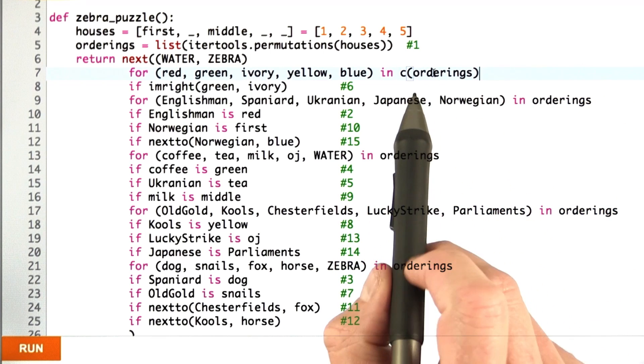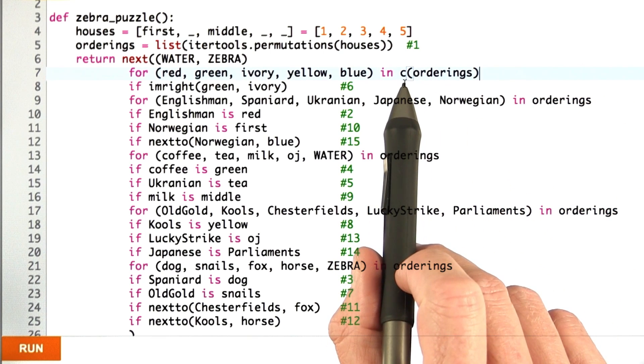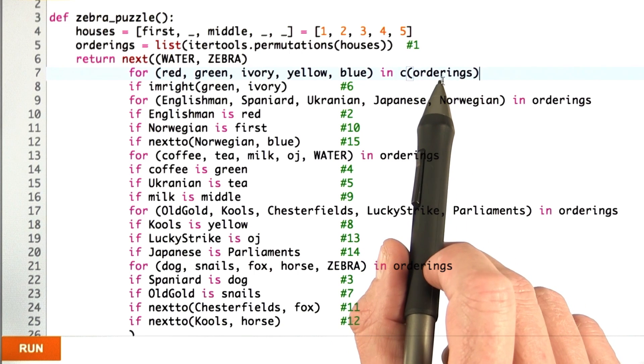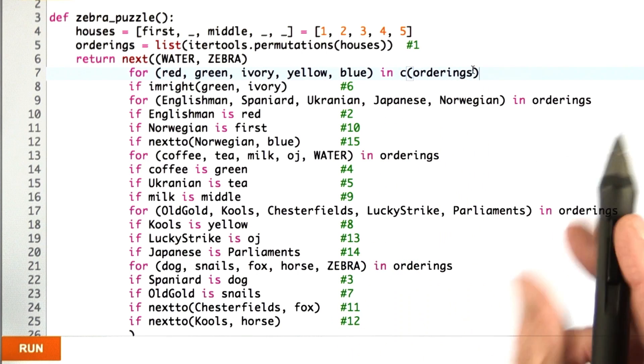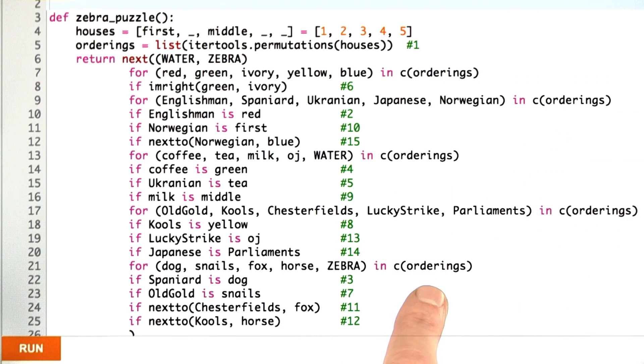What I'll do is I'll just insert this call to the function c around each of my uses of orderings. I'm going to insert 1, 2, 3 times 5, 15 characters. There we are. I think that's a lot less intrusive than putting in a lot of count equals count plus 1 statements, so I'm pretty happy with that.